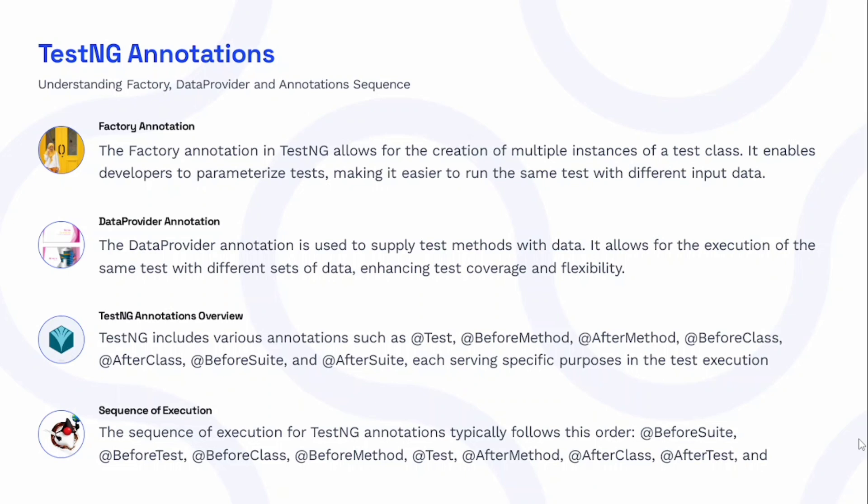The next TestNG question is: what are the different types of TestNG annotations? TestNG includes various annotations such as @Test, @BeforeMethod, @AfterMethod, @BeforeClass, @AfterClass, @BeforeSuite, and @AfterSuite, each serving a specific purpose in test execution. The last TestNG question is: what is the sequence of these annotations? The order is: BeforeSuite, BeforeTest, BeforeClass, BeforeMethod, Test, AfterMethod, AfterClass, AfterTest, and AfterSuite.